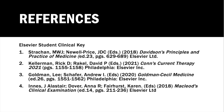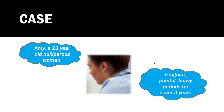Let's begin. Amy, a 23-year-old nulliparous woman, presents to you and the doctor complaining that her periods over the last few years have been very irregular, sometimes coming only every three to four months. Her last few periods have also been very heavy and painful, and she has even had to take a couple of days off work. What are your key differentials and what further information do you need?